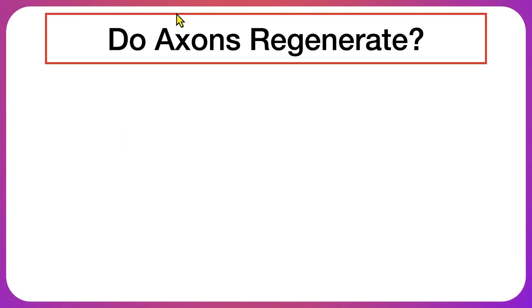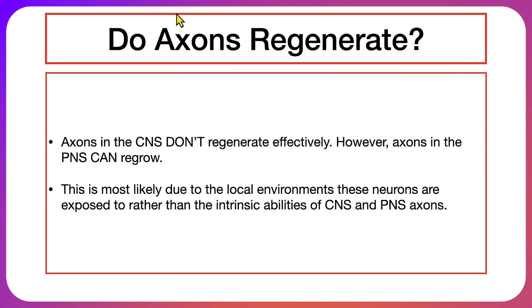So then this brings up the question as to whether axons regenerate, and the answer to this question is yes and no. Axons in the central nervous system don't regenerate effectively. However, axons in the peripheral nervous system can regrow, and this is most likely due to the local environments that these neurons are exposed to rather than their own intrinsic abilities.